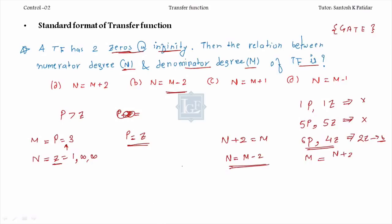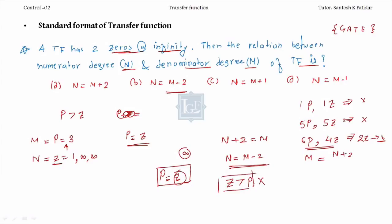The concept is that p should equal z for any transfer function. If you have a deficiency of zeros, you consider them at infinity. In the control system, we will never deal with improper transfer functions (where z > p). So please do not ask what happens if zeros are 6 and poles are 3 - that is an improper transfer function which we do not discuss in control systems.